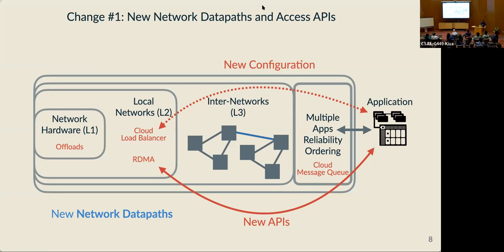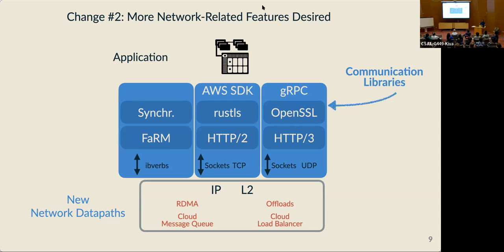The second change — a related one — is a shift in the features that applications want from the network. To gain access to these features, applications have adopted an ecosystem of libraries, which I'll broadly refer to as communication libraries, to help them unlock the features and performance of the network data path. Examples might be using the AWS SDK to access a publish-subscribe message queue in the cloud, using the gRPC API which might run over QUIC, or using the ibverbs library to access an RDMA network with additional libraries for memory management or synchronization.